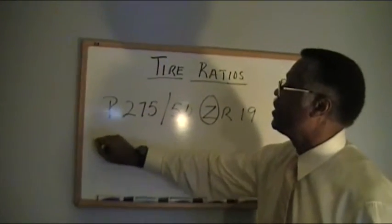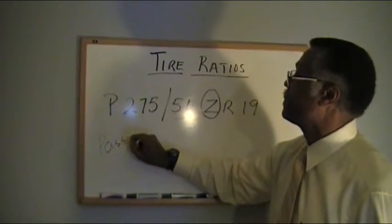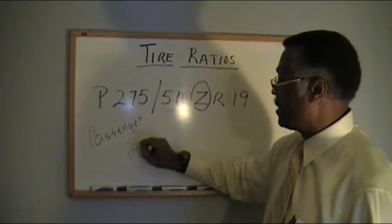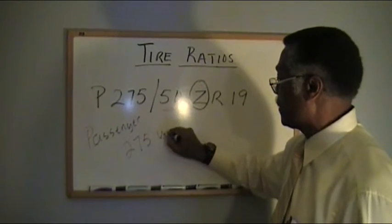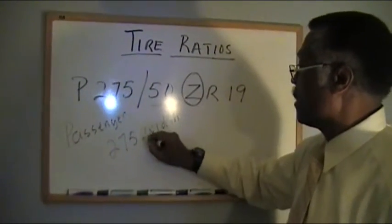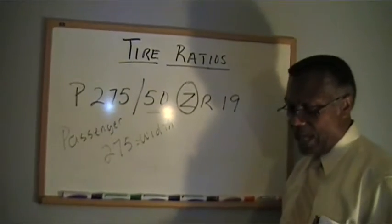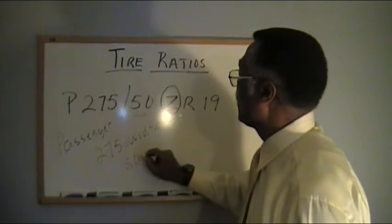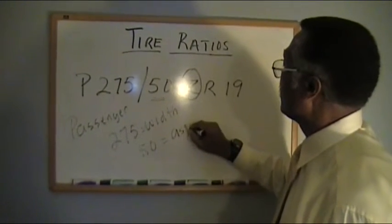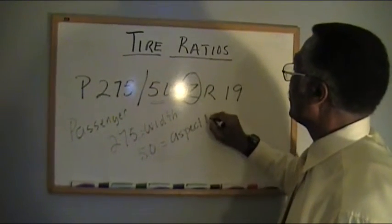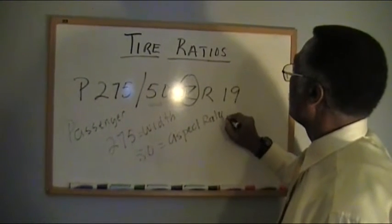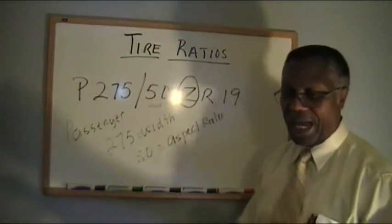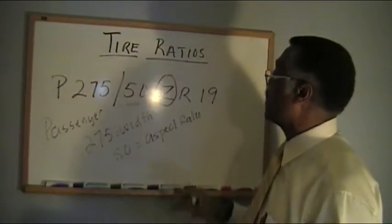275 is the tire's width. The 50 is actually the tire aspect ratio - the aspect ratio of the tire as it relates to the height and the width of this particular tire.